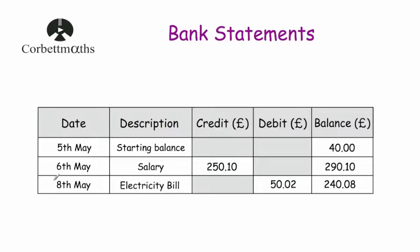The next activity is on the 8th of May — the description says electricity bill, and there's a debit. Debit means money has been taken out of the bank account. For an electricity bill you're paying it, so you're taking money out. The debit was £50.02. There was £290.10 in the bank, so taking £50.02 out leaves £240.08.